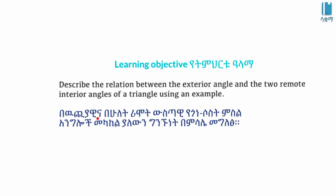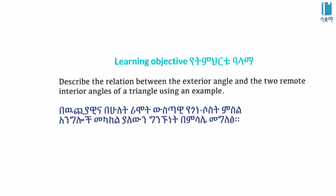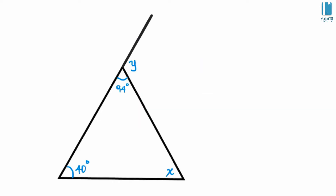I'm going to describe the relationship between the exterior angle and the two remote interior angles of a triangle. I'm using an example of a triangle to describe this.